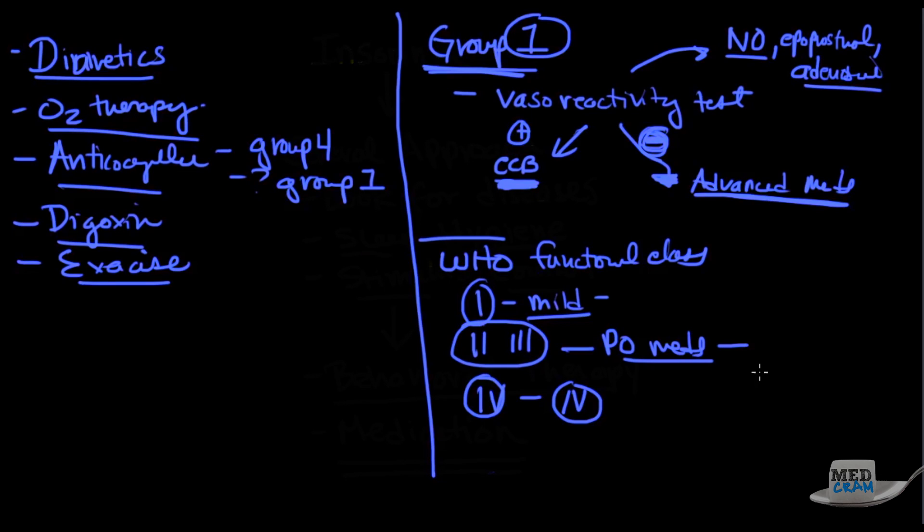Most of these medications haven't been around for more than 15 years. That's how new they are. And if you're lucky enough to have a patient who is responsive to a vasoreactive medication, then you can just give a calcium channel blocker, which is dirt cheap and has been around for many years. If, on the other hand, they don't respond, and they're a WHO class two or three, then you're going to be starting them on some PO meds, which we're going to talk about right now.